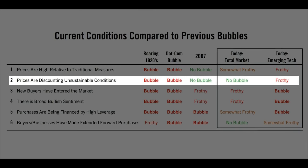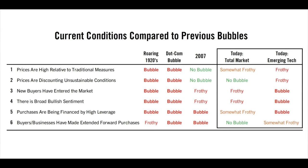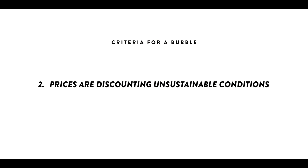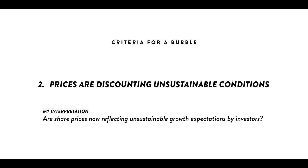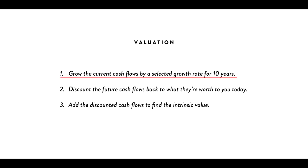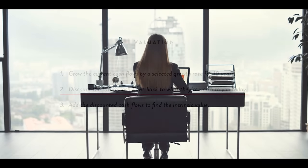The second point is that prices are discounting unsustainable conditions — unsustainable starts to be part of the picture of a bubble. Unsustainable means that by the nature of the buying, whoever is doing the buying and how, the supply-demand situation won't be sustained, and that produces a correction or prices going down. I thought Ray could have done a slightly better job explaining this point, because I'm not entirely sure what he's talking about here.